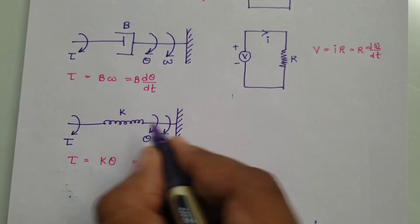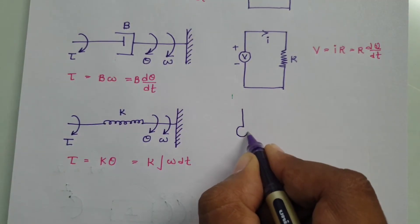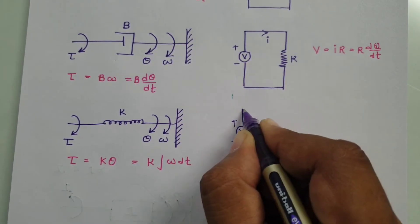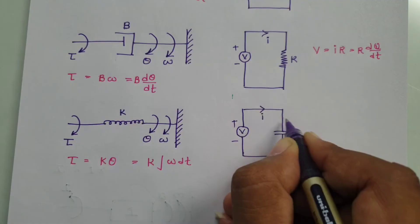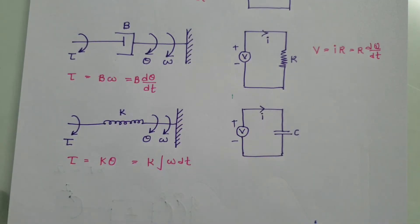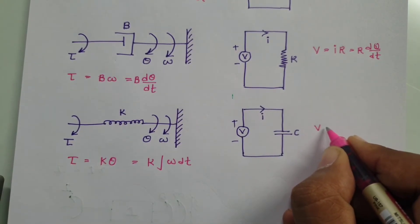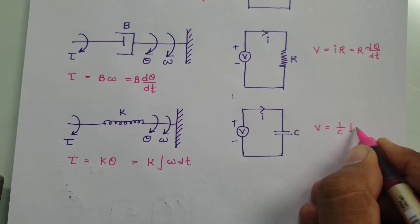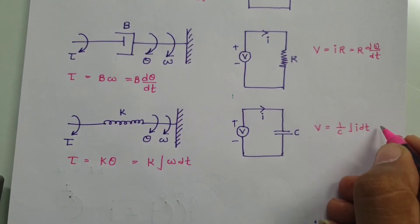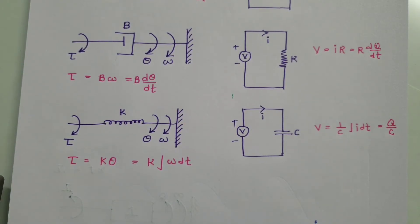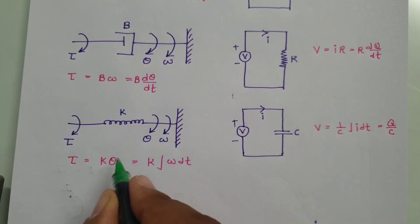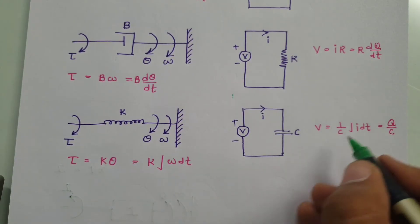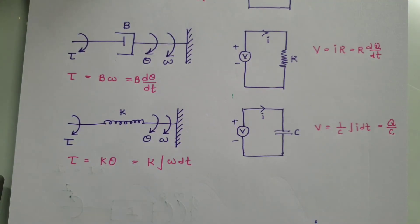To replace the spring constant in the electrical system for torque-voltage analogy, we use a capacitance C. With current I and capacitance C, the voltage across the capacitor is (1/C)∫I·dt, which also equals charge divided by capacitance. So spring constant K is replaced by 1/C, angular displacement θ is replaced by charge Q, and angular velocity ω is replaced by current I.